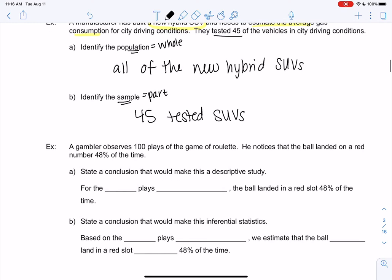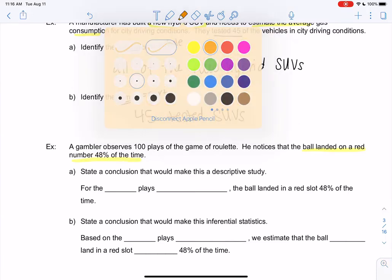So a gambler observes 100 plays of roulette. Roulette, you could Google it really quickly. It's like this wheel and it has like red and black spots and a ball goes around and lands on them and then there's two green spots. So it's kind of up to chance like where the ball lands.